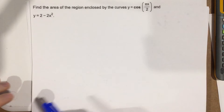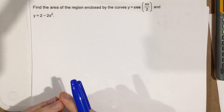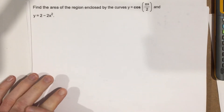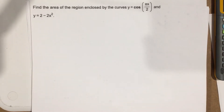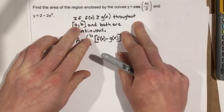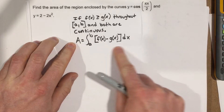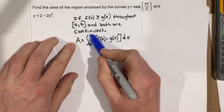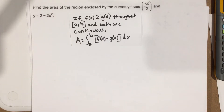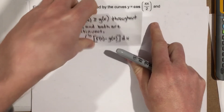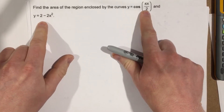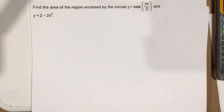What we want to do here is figure out our boundaries — the x values we want to integrate over. To find the area, we're going to integrate using the formula where we take one function minus the other function, but we need to figure out the a and b values. We typically set one equation equal to the other and solve to find their intersections.